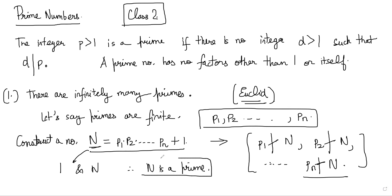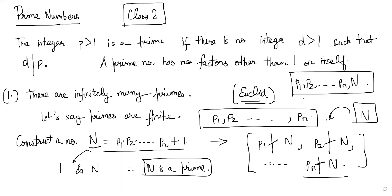So now our list of primes must be updated — you have to add N to the list. This process can be repeated countless times: your list becomes p1, p2, ..., pn, N, and then you construct a new number p1 × p2 × ... × pn × N + 1, which also turns out to be prime. In this way you can construct an infinite number of primes, which contradicts our assumption that primes are finite. This process can be repeated endlessly, and you can keep constructing newer and newer prime numbers.